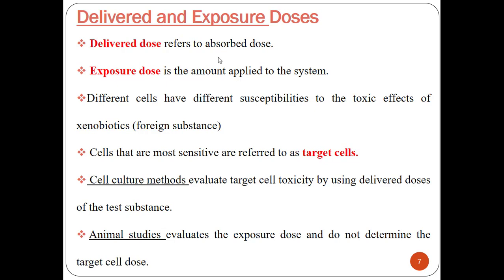The exposure dose is the amount applied to the system. For example, if an animal is exposed to an atmosphere containing a noxious — that is, harmful — substance, this is the exposure dose. However, only a small portion of the inhaled substance will be absorbed and delivered to the internal organs and cells of the animal — this is the delivered dose. So delivered dose refers to the absorbed dose, while exposure dose refers to the amount applied to the system or animal.